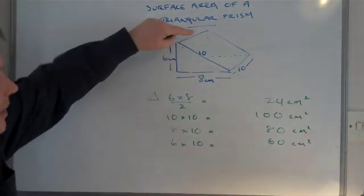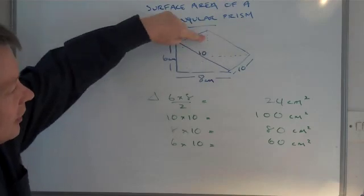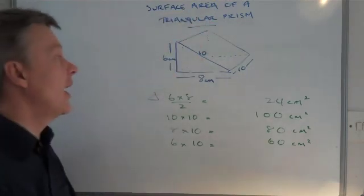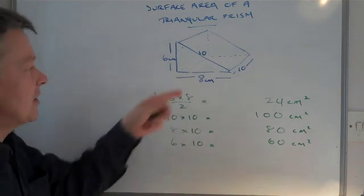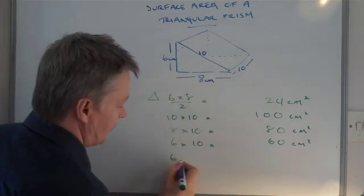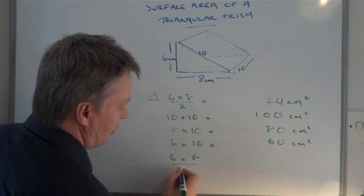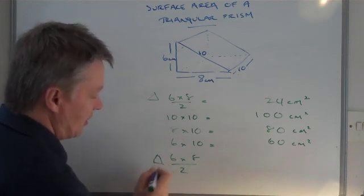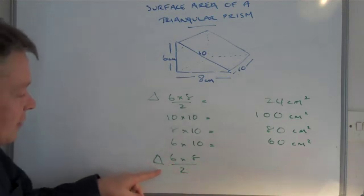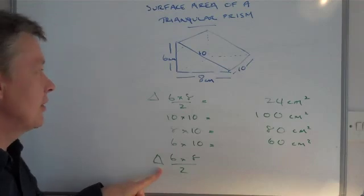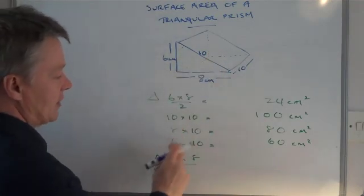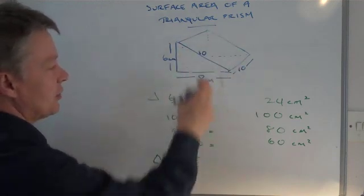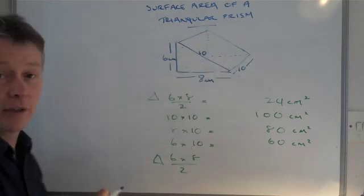And then finally, I also have this final triangle at the far end of the wedge, which is the same as this triangle here: 6 times 8 divided by 2. Just to help me, sometimes what I do when I'm working this out is I'll put a little triangular sign there just to remind myself that it's a triangle, and then these are rectangular or square surfaces, and then triangle at the bottom.